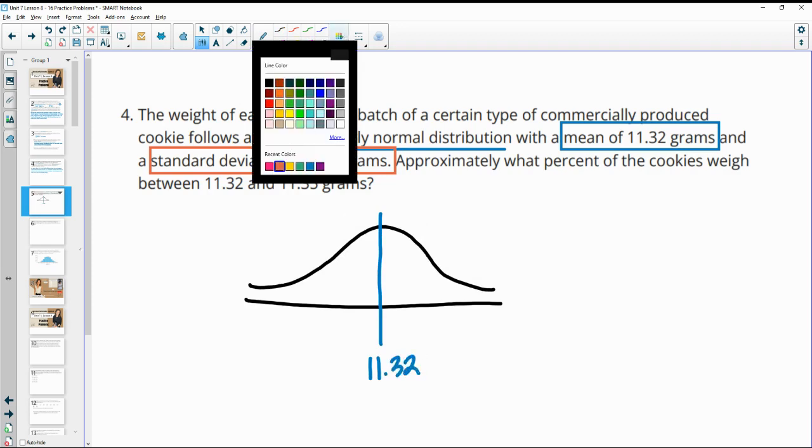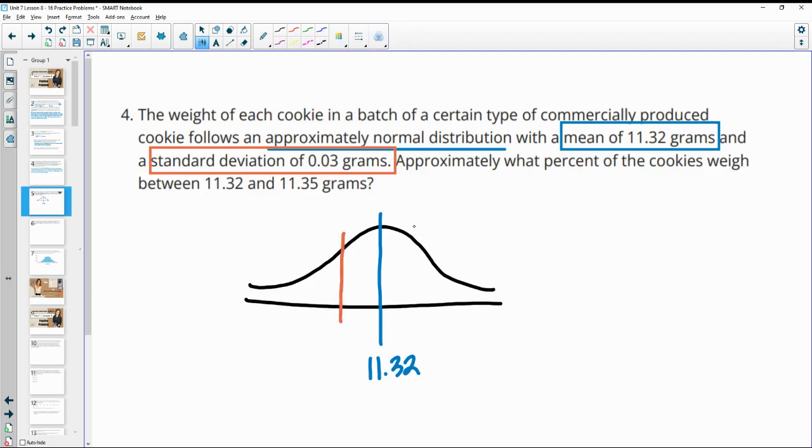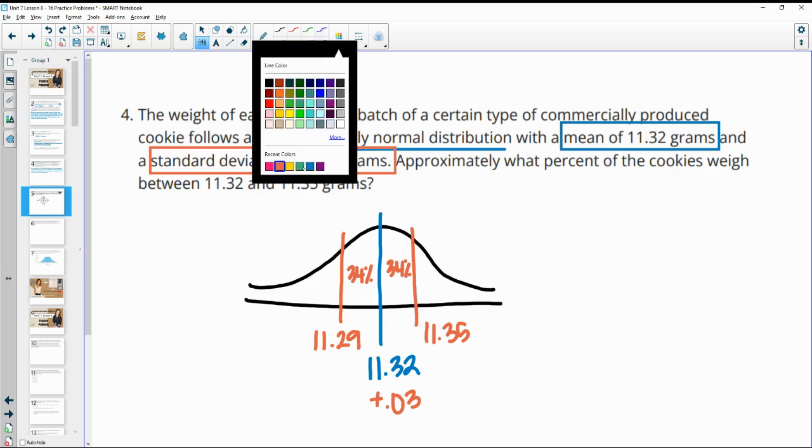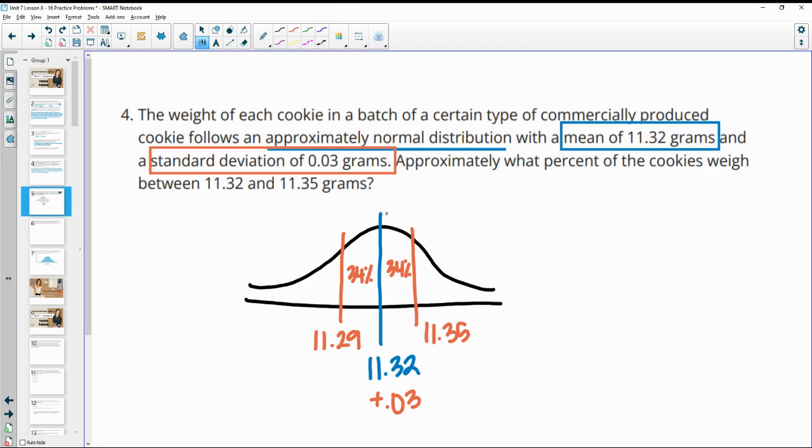Within one standard deviation, plus or minus 0.03 grams from the mean would be 68% of the numbers. So if we go 11.32 plus 0.03, that's going to be 11.35 right here. Or if we subtract, that's going to be 11.29. And 68% of the data is here. So that means 34% on this side and 34% on this side. They are asking us for between 11.32 and 11.35, so they're looking at this chunk, which is 34% we can expect.